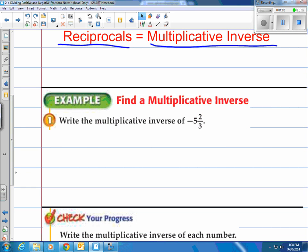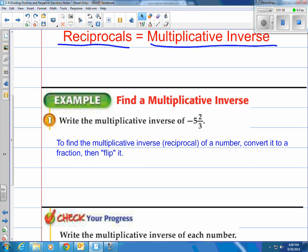How do you find a multiplicative inverse or reciprocal? Step 1 is you're going to convert it to a fraction first then flip it. To find a multiplicative inverse or reciprocal of a number, convert it to a fraction then flip it.